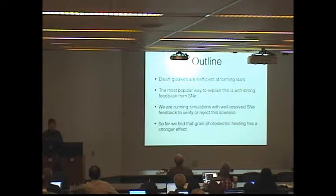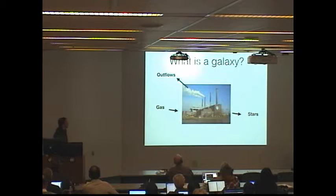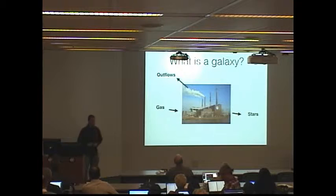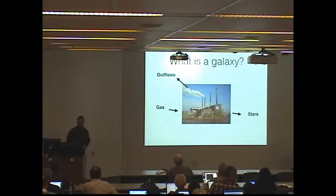So dwarf galaxies are inefficient at forming stars. What is a galaxy? I like to think of galaxies as factories where the universe turns gas into stars and sometimes removes some of that gas in the process. And if you think of galaxies this way, dwarf galaxies are bad at their jobs.